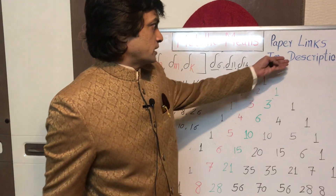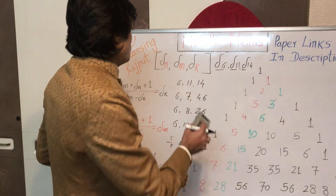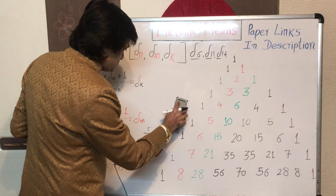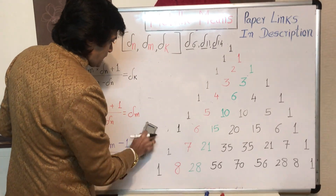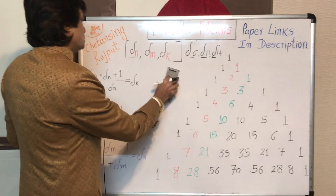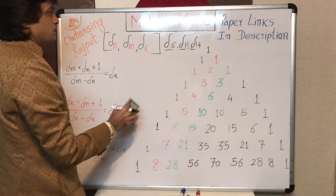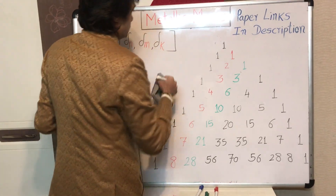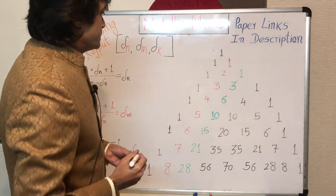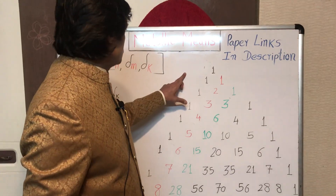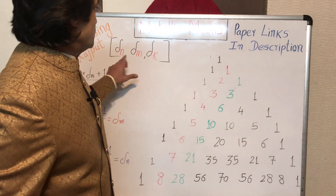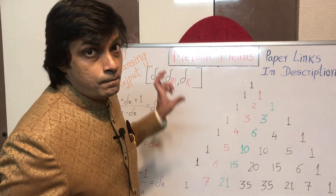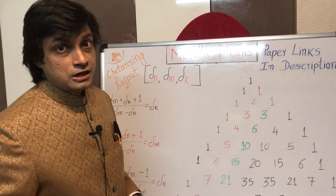All those paper links are given in the description. In this video, we will see how these triads of metallic ratios or metallic means are associated with Pascal's triangle — how Pascal's triangle can give us the values of N, M, and K which form the triads of metallic ratios.